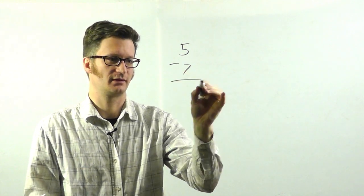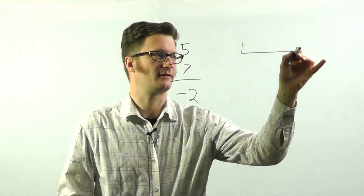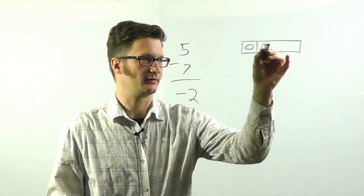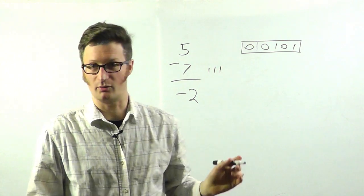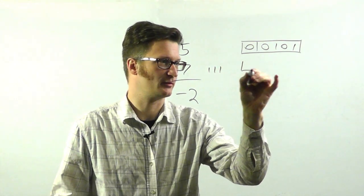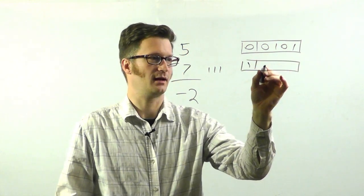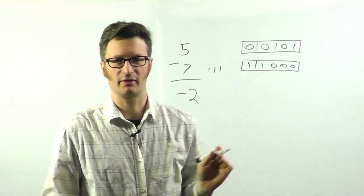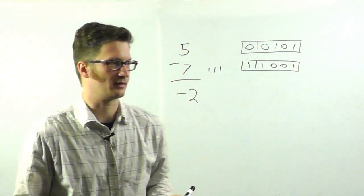So, let's take a simple case of 5 minus 7. As we know, that equals negative 2. And let's work with a 5-bit register. Since 5 is positive, that'll be 0. And we have 0, 1, 0, 1. 7 is represented by 1, 1, 1 in straight binary. But since we're doing negative 7, we're going to take and put a 1 there. And then we're going to complement the values. And I'm going to do this in 2's complement. So, I'm going to put a 1 there by adding 1.